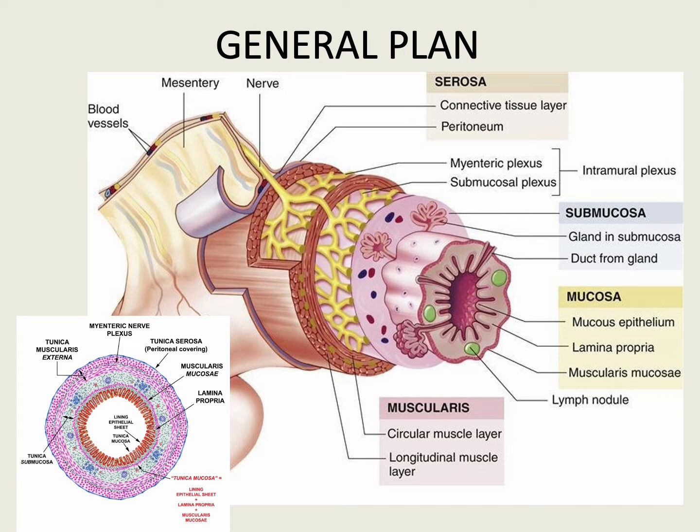The mucous membrane rests upon a layer of loose areolar tissue called the submucosa. Then we have a thick layer of muscle called the muscularis externa that surrounds the submucosa. Covering the muscularis externa there is a serous layer or an adventitial layer. Primarily it is the mucosa in which changes are seen in the alimentary tract; the other layers remain almost the same.